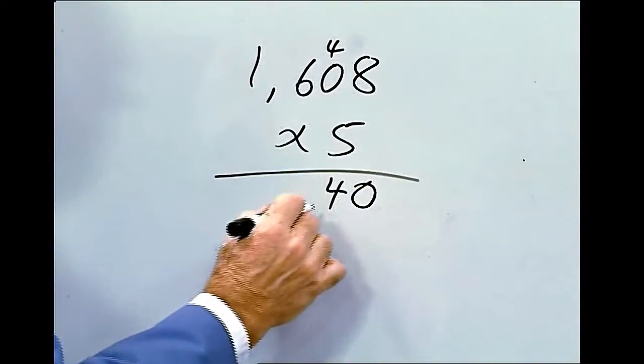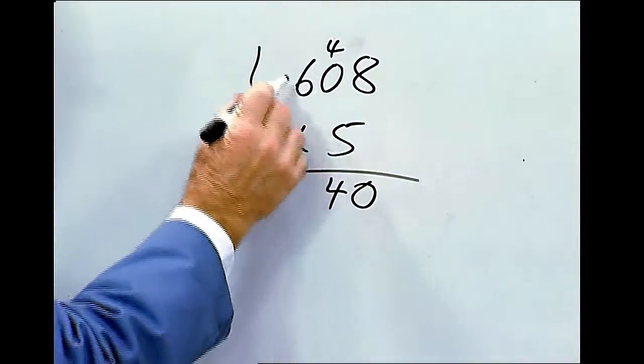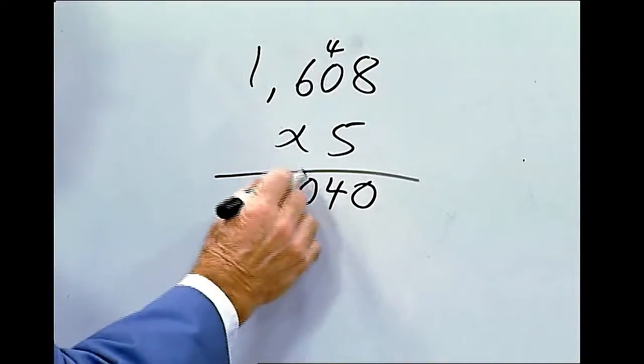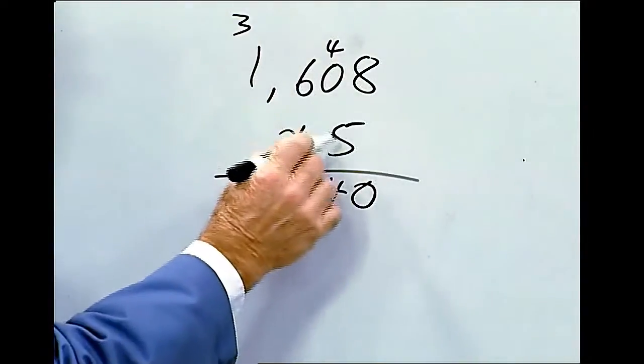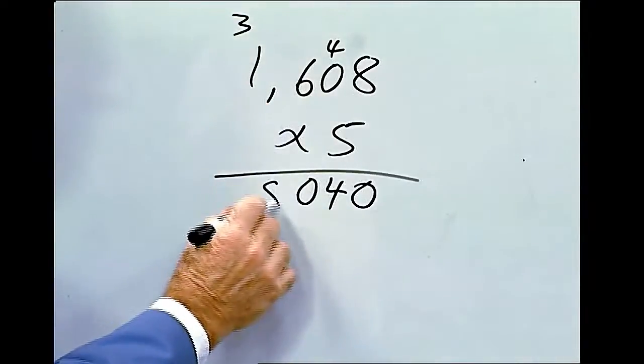Plus 4. Carry down the 4. 5 times 6 is 30. Carry the 3. 5 times 1 is 5. Plus 3 is 8.